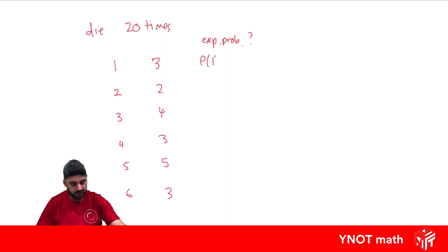Well, the experimental probability of getting a 1, well, we tossed it 20 times, and we got 3 ones, so it'd be 3 out of 20. For the 2, we tossed it 20 times, and we got 2 twos, so it'd be 2 out of 20. For a 3, tossed it 20 times, and we got 4 threes. For a 4, we tossed it 20 times, and got 3 fours. For a 5, tossed it 20 times, but got 5 fives. And for 6, we tossed it 20 times, and got 3 sixes.